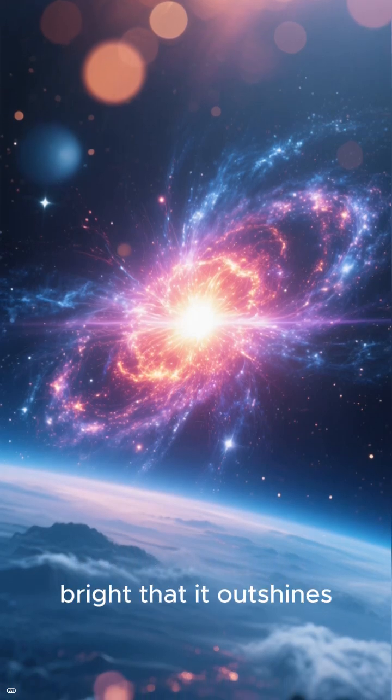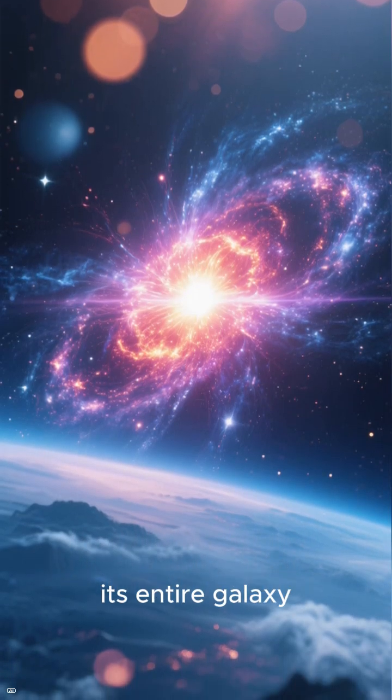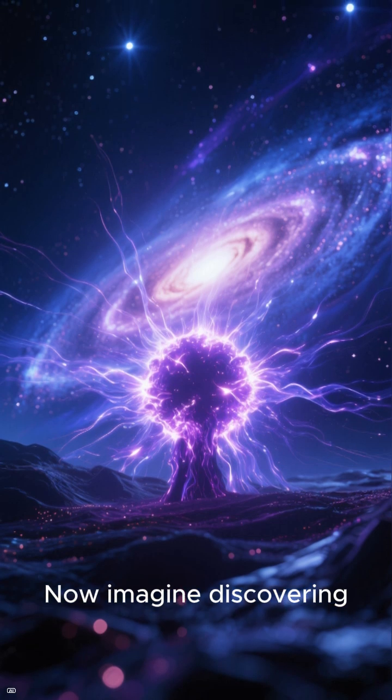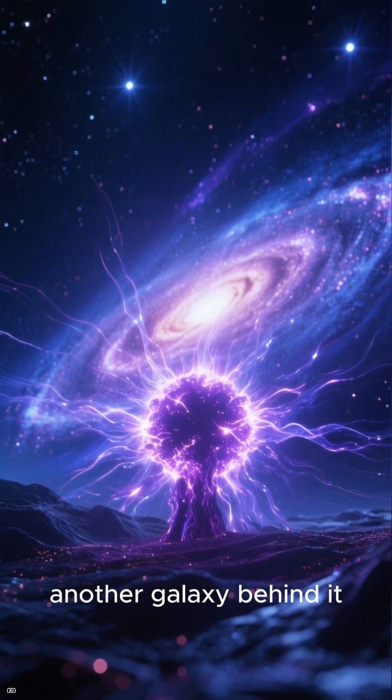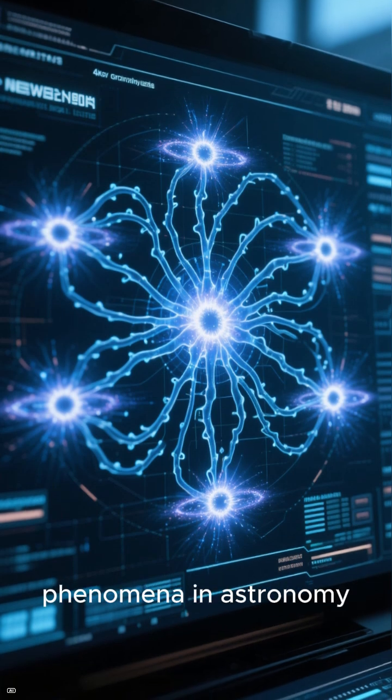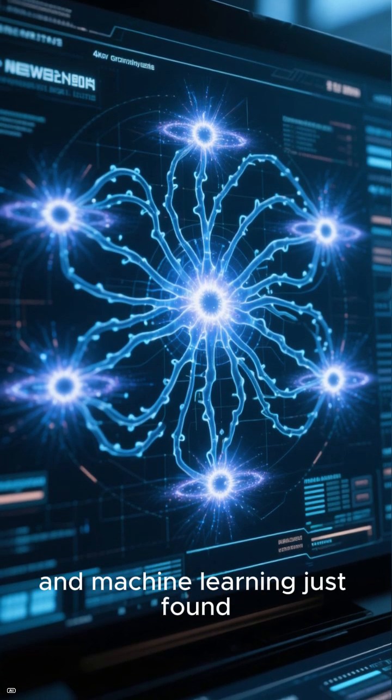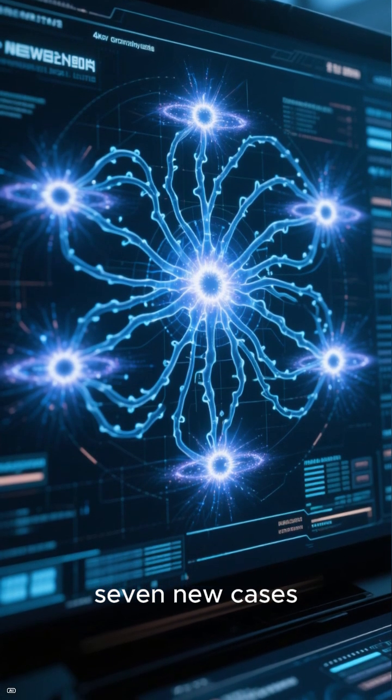Imagine looking at a quasar so bright that it outshines its entire galaxy. Now imagine discovering that this same quasar is bending the light of another galaxy behind it. That is one of the rarest phenomena in astronomy, and machine learning just found seven new cases.